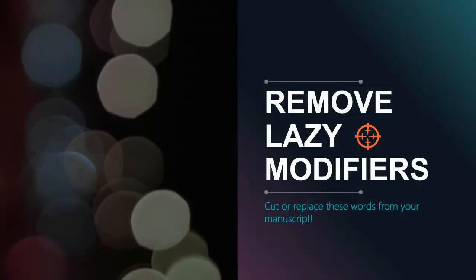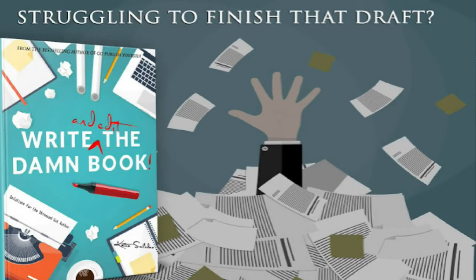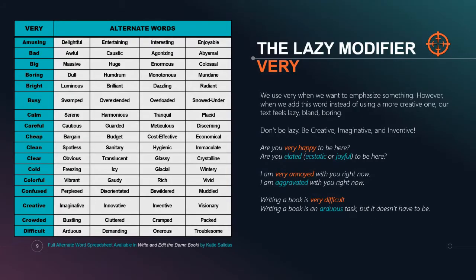Next we move on to lazy modifiers, and the reason we call them lazy is because they could be better — we could find other ways of saying something instead of just throwing in the first word that fit. The biggest culprit is 'very.' Now this list on screen is not a complete list; for a full alternate word list I have that available in my book. 'Very' is used when we want to emphasize something: very amusing, very bad, very boring, very busy. We use 'very' without even thinking about it, and that's what makes it a lazy modifier.